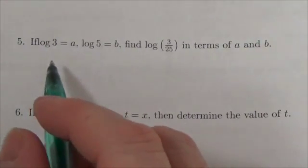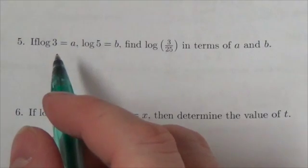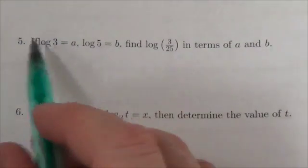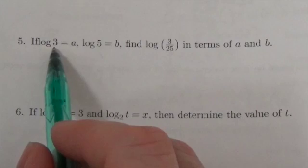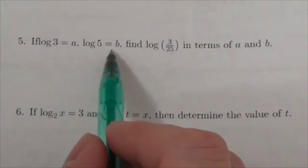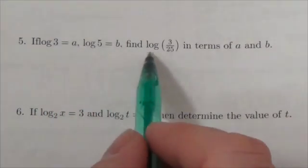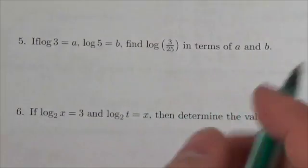Okay, this question right here, this is kind of an interesting style of question. If log base 10 of 3 is equal to A and log base 10 of 5 is equal to B, then find log base 10 of 3/25 in terms of A and B.